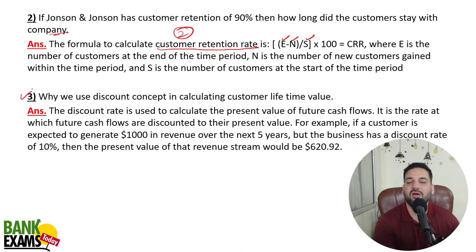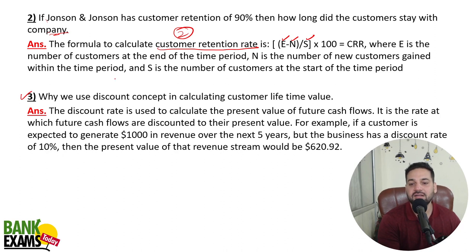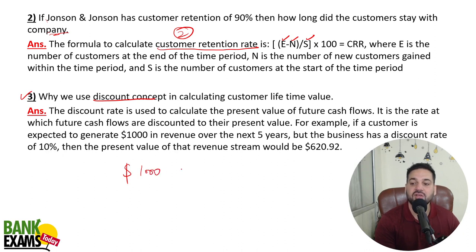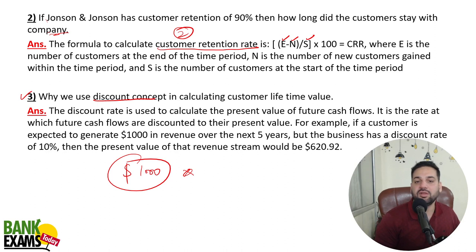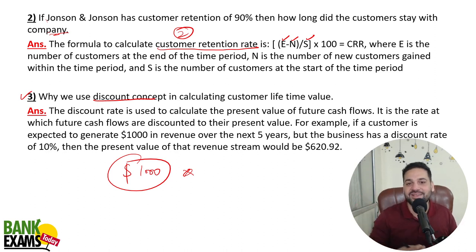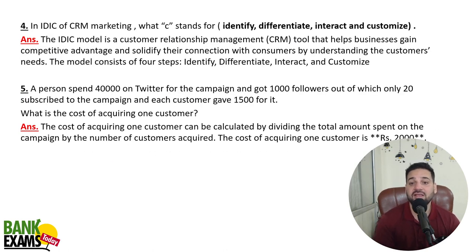The discounting concept appeared here, although it's from financial management. A customer's lifetime value to the business is, say, $1,000. If the discount rate is 10% and the value spans 5 years, we can find the present value of that future amount using discounting methods. That's how present value is used in CRM marketing.